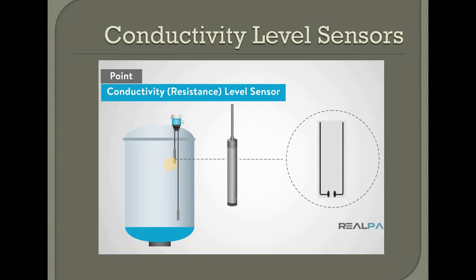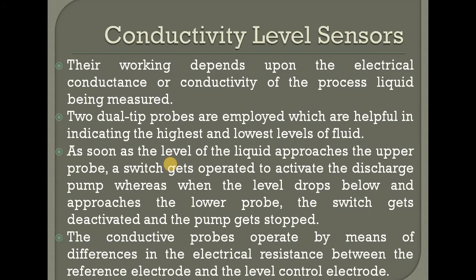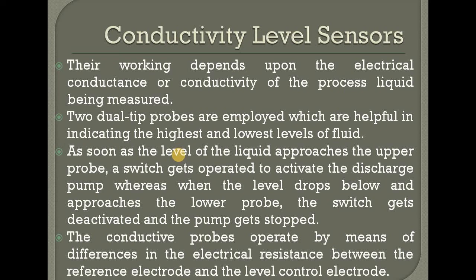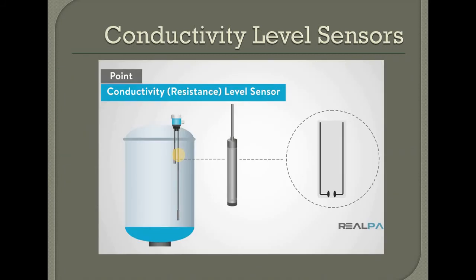That is the point level measurement. They work depending upon the electrical conductance — conductivity. Conductivity is like electrical conductance. Two dual deep probes. We have two probes — one indicating the highest level and one the lowest level. Employees, which are helpfully indicating highest and lowest levels: the highest level is fluid. What is the upper probe? The switch gets activated — activated, discharge, pump. Whereas when the level drops below and approaches the lower probe, the switch gets deactivated and the pump gets stopped.